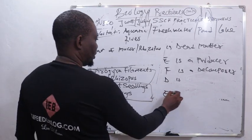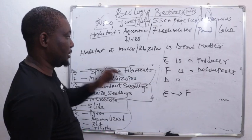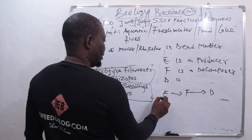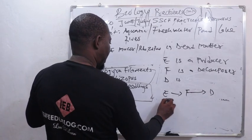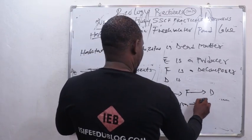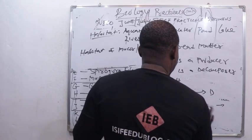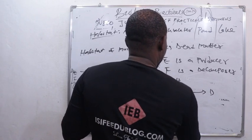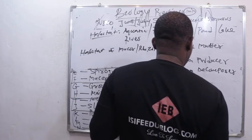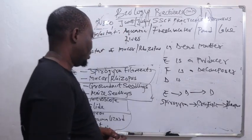The food chain would be: E (producer), which goes to crawfish (consumer), and then to Rhizopus (decomposer). So where E is Spirogyra and F is Rhizopus, the food chain is: Spirogyra → Crawfish (D) → Rhizopus. The Rhizopus feeds on the dead matter from the crawfish.